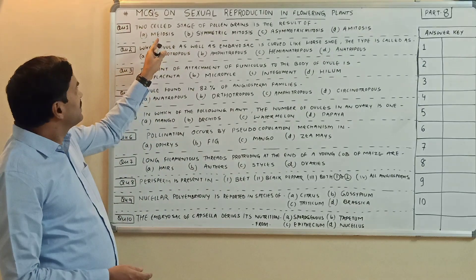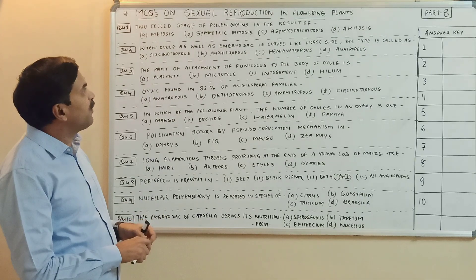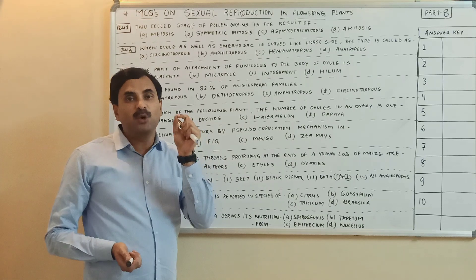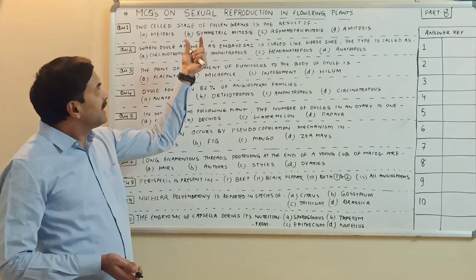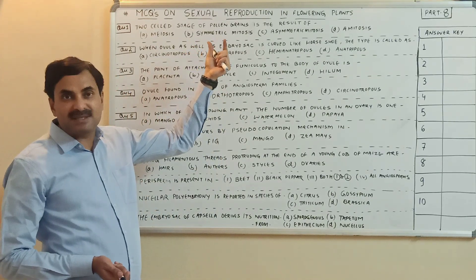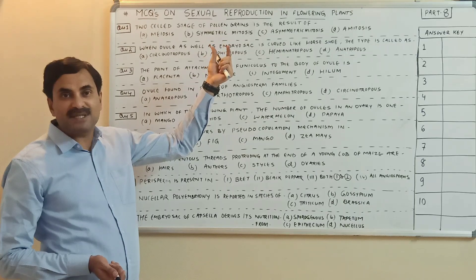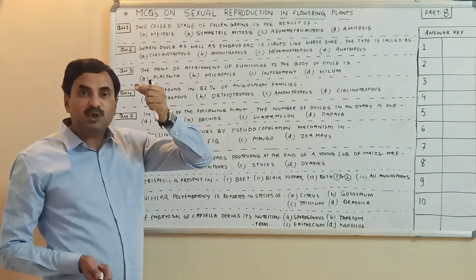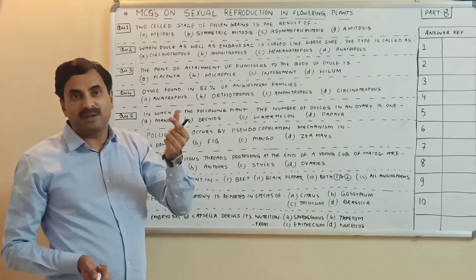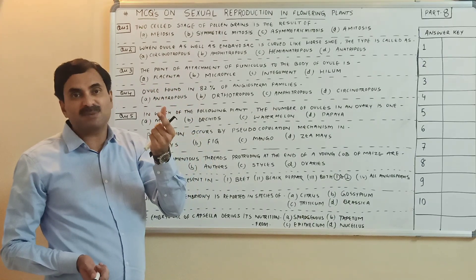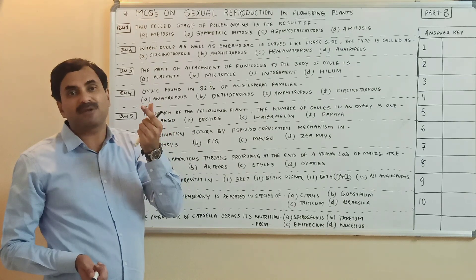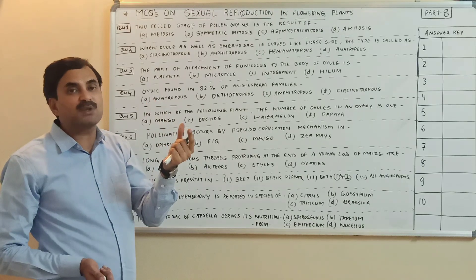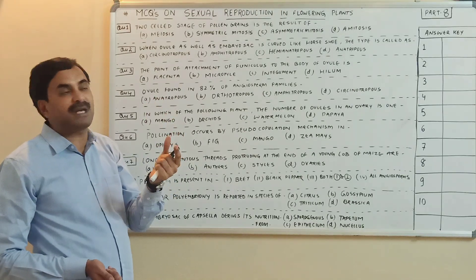Question number one: the two-cell stage of the pollen grain is the result of? As we know, in a pollen grain there are two cells. One is known as the generative cell and another is known as the vegetative or tube cell. Both cells are unequal — the generative cell is small and the tube cell is big. Both cells are produced because of an unequal mitotic division.